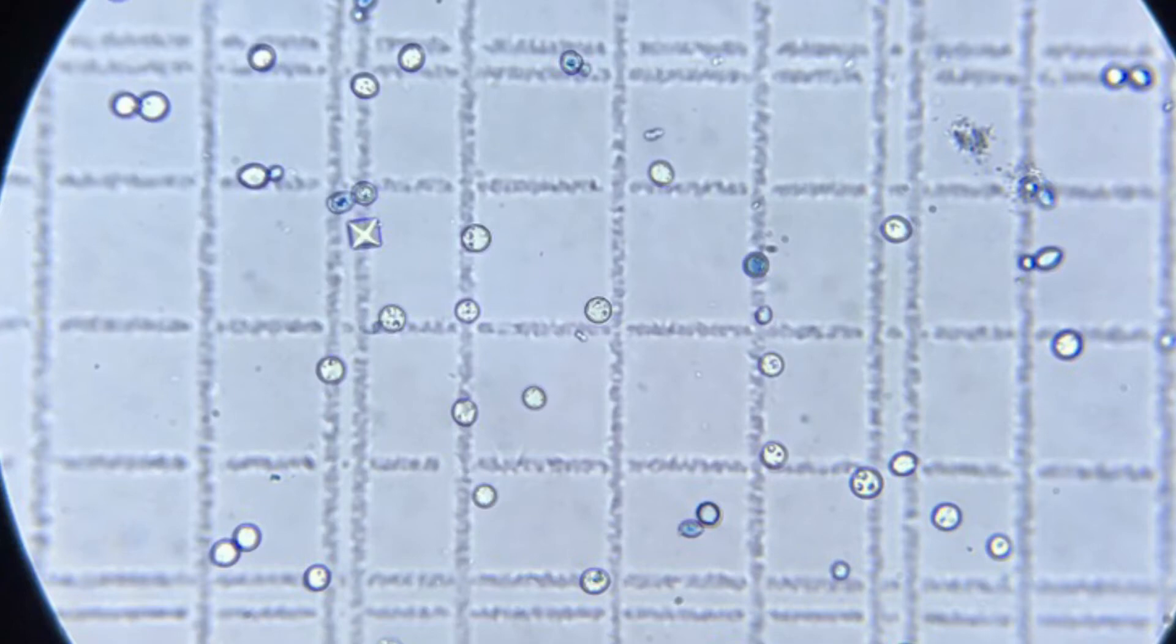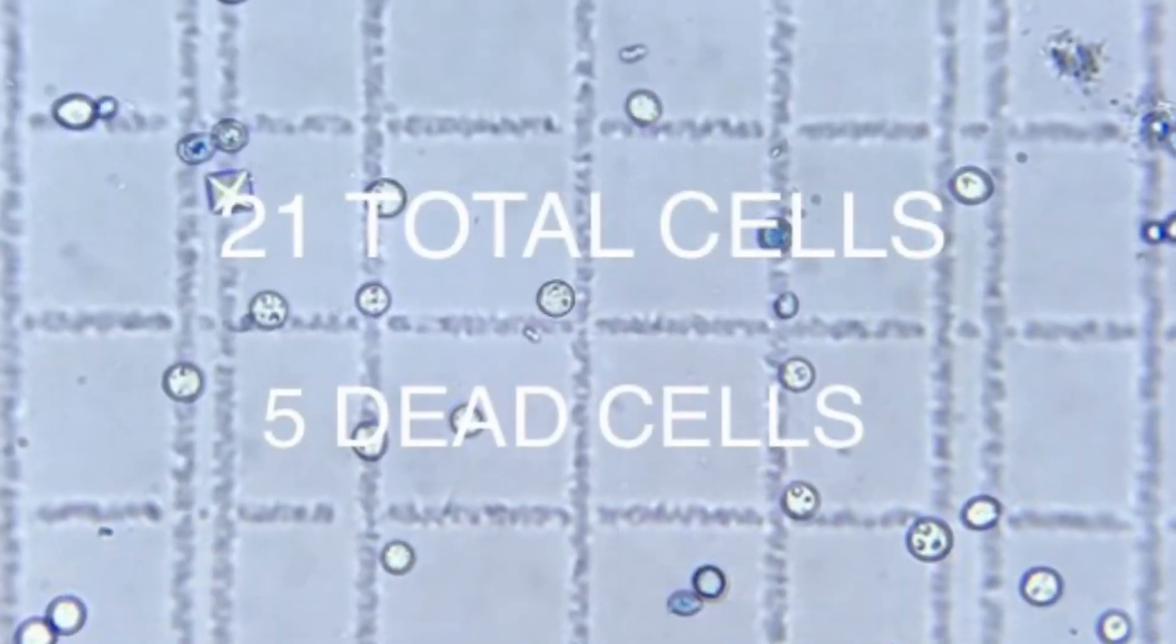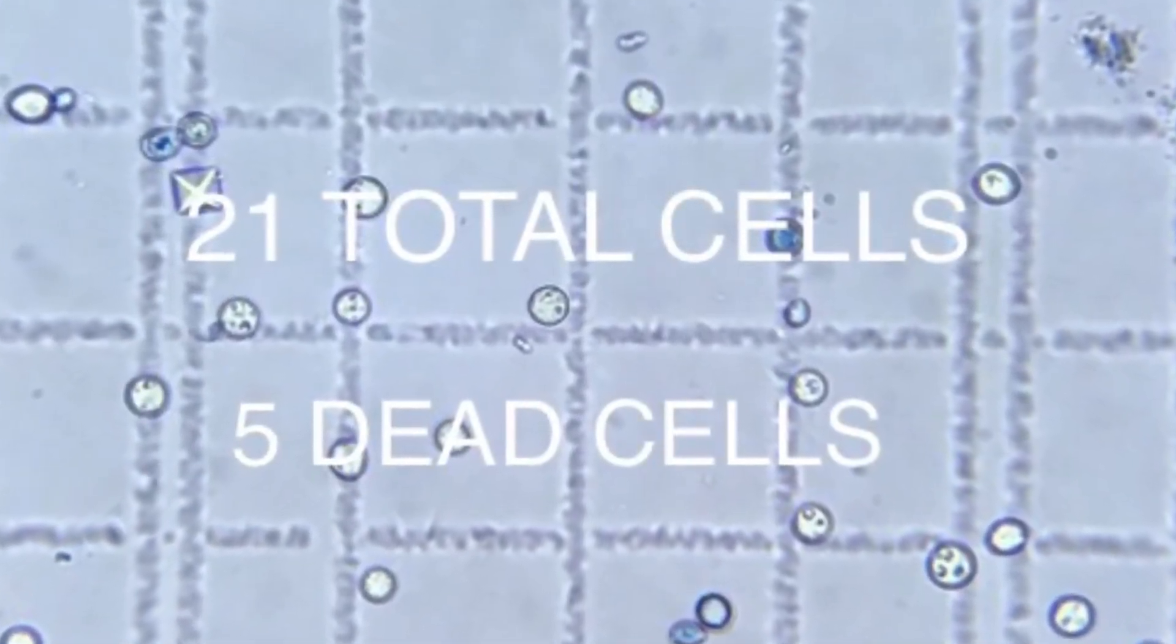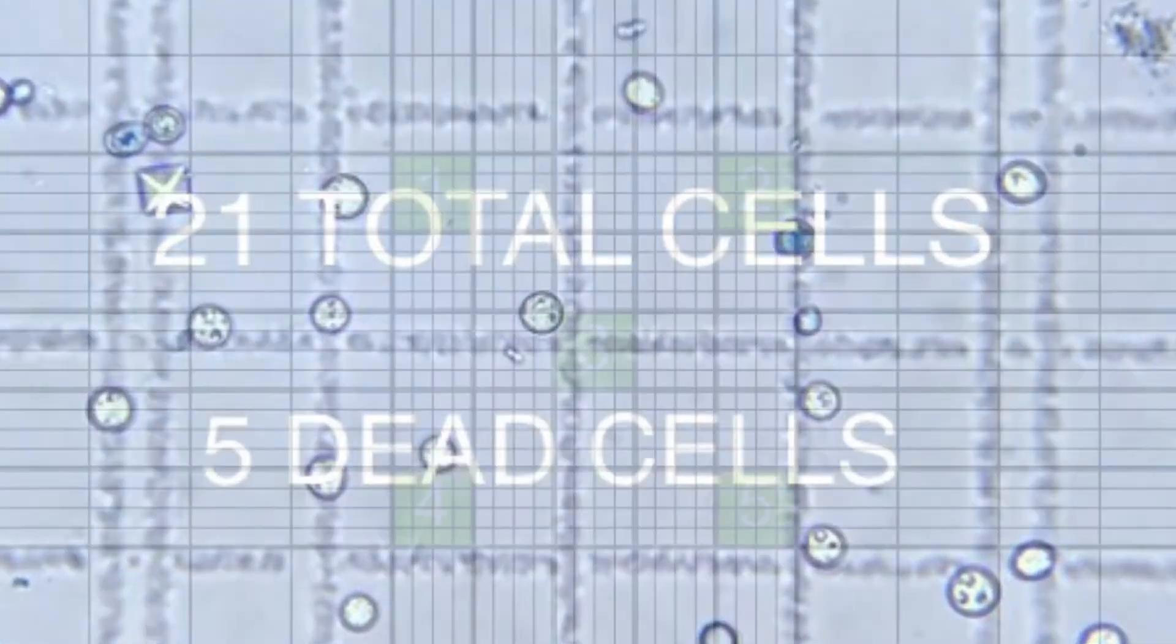So for the first grid in our count, I counted a total of twenty-one cells, with five of them stained blue. Now we repeat the process in the opposite corner.